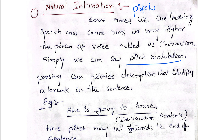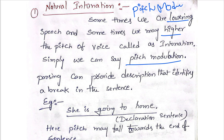Based on the voice frequency, we can identify whether a sentence is a declarative sentence or a questioning sentence — determined by how the end of the sentence closes. Sometimes we lower the pitch and sometimes we raise it. This procedure of lowering and raising your voice is called natural intonation, or simply pitch modulation.